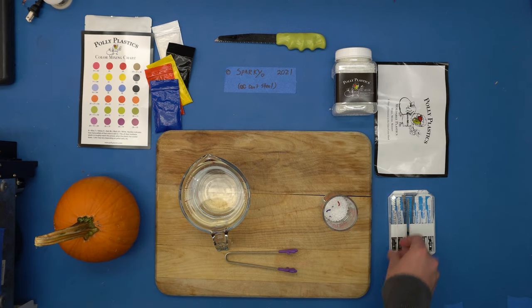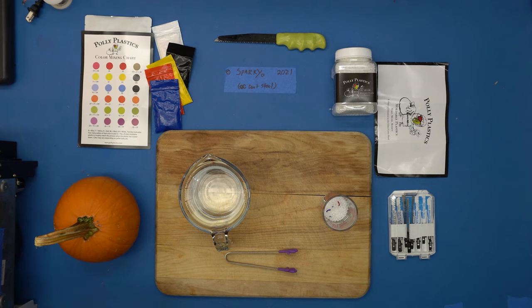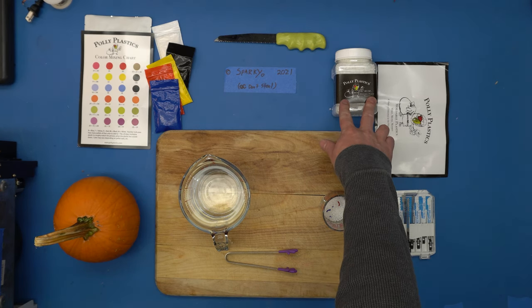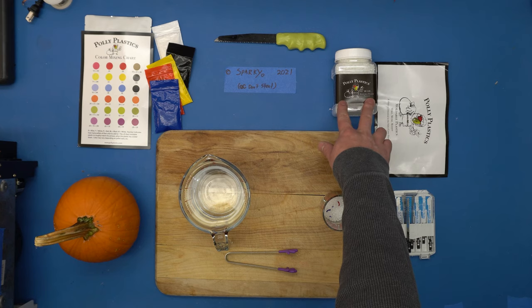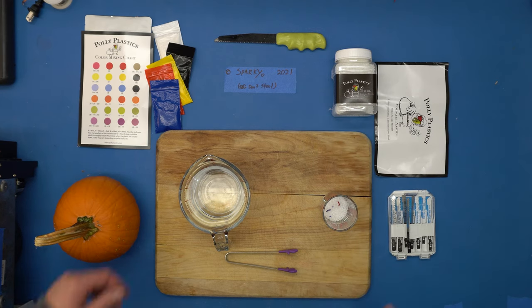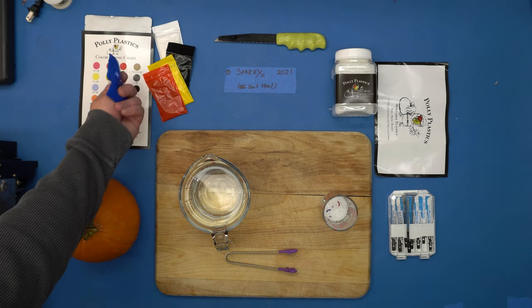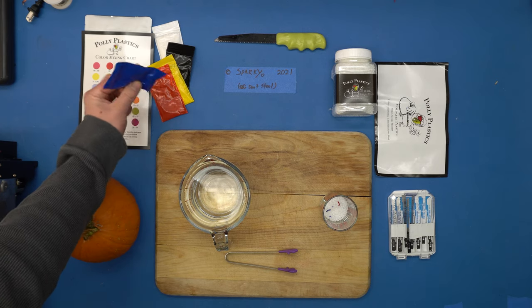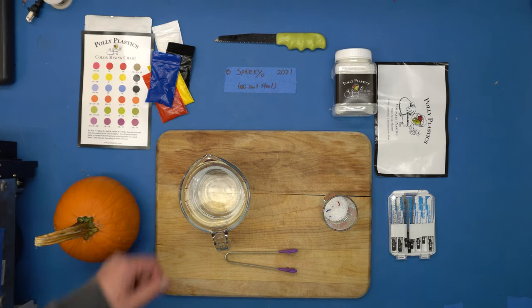The way we're going to do this is using something called friendly plastic or moldable plastic. I bought this kind from Polyplastics through Amazon. Ten ounces was about $12. They also sell these color pellets for $12 for the set. Not as impressed with these, but we'll show you how it's done.